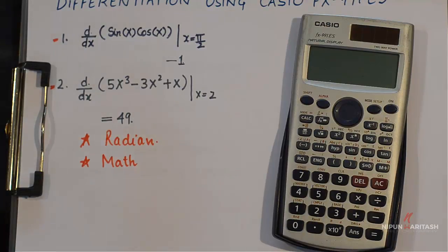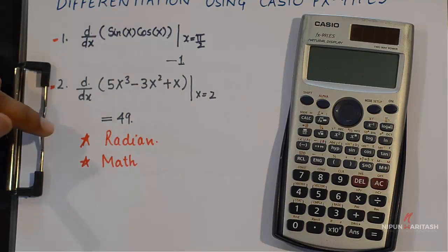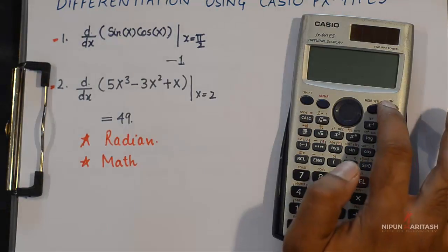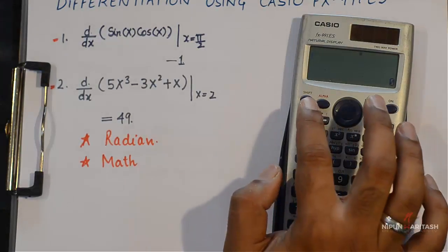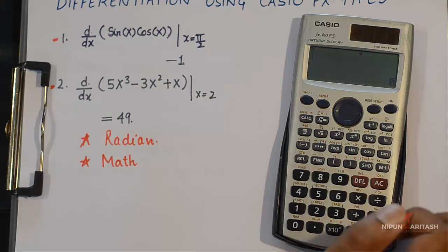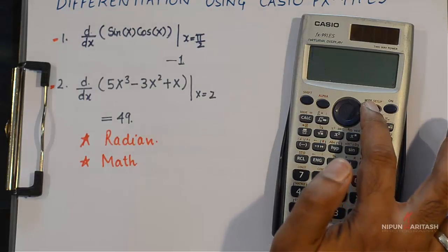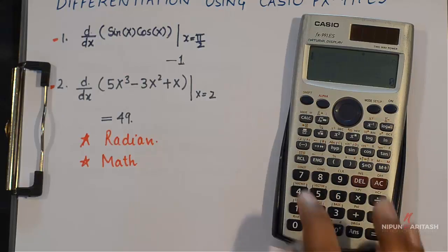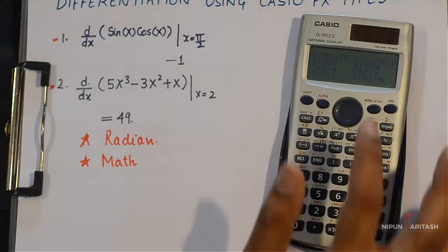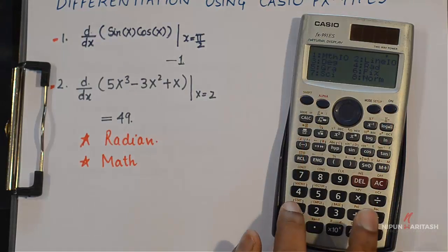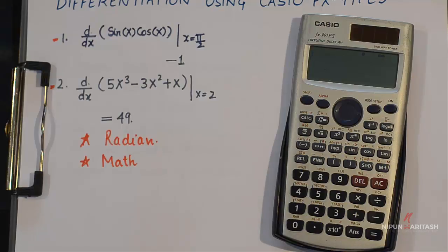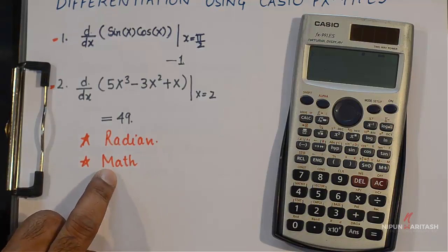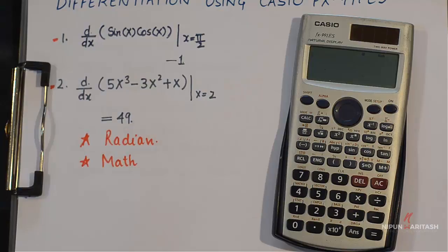For that we can press shift and go to mode and then we can press 4 to select radian. We go back to shift mode and press 1 to select maths. In the maths mode it is going to be a lot easier to put the values in the differential form.